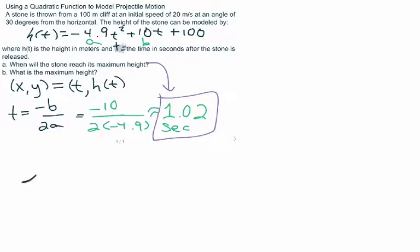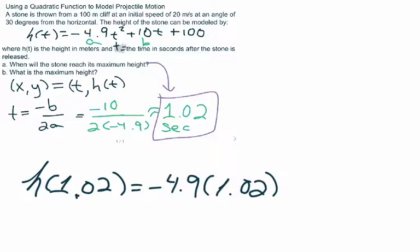Our maximum height will be found by h of 1.02 equals negative 4.9 times 1.02 squared plus 10 times 1.02.